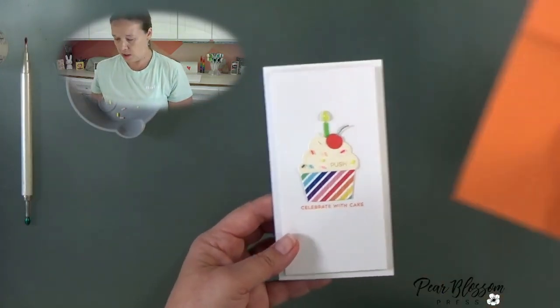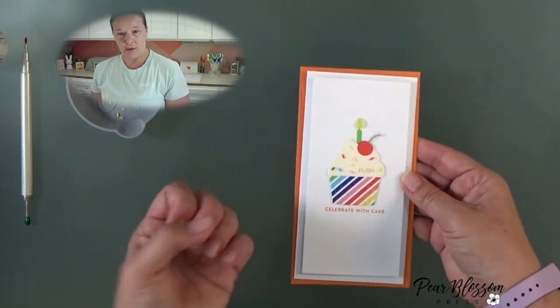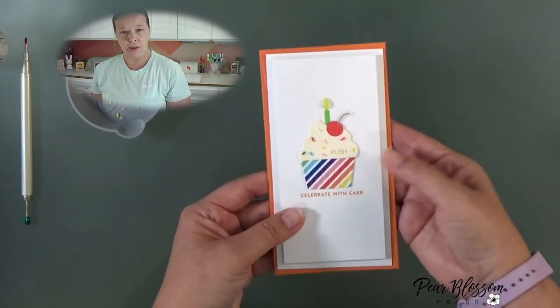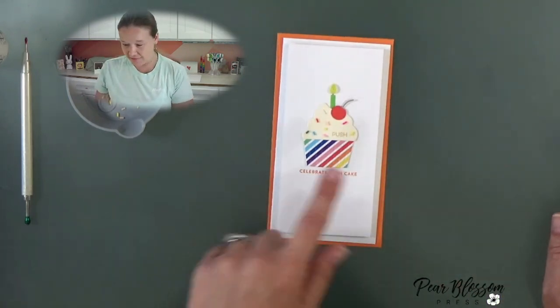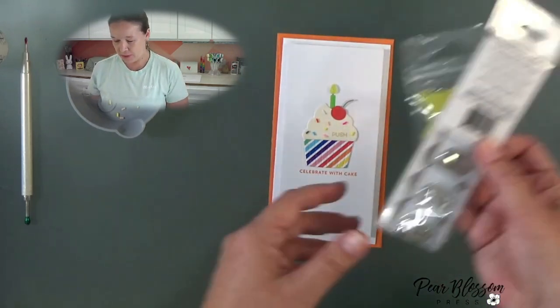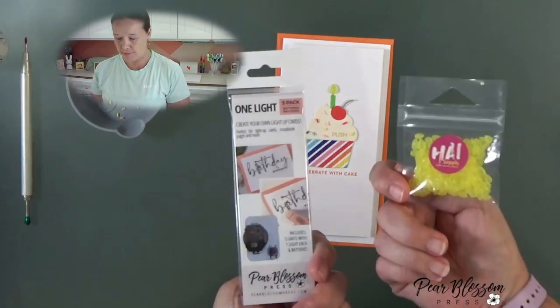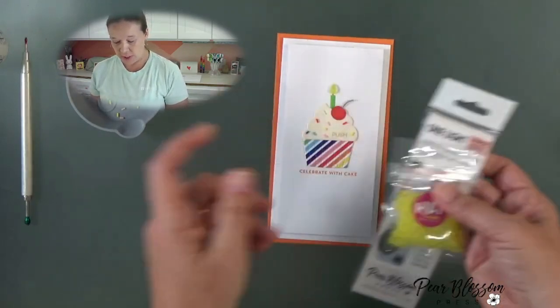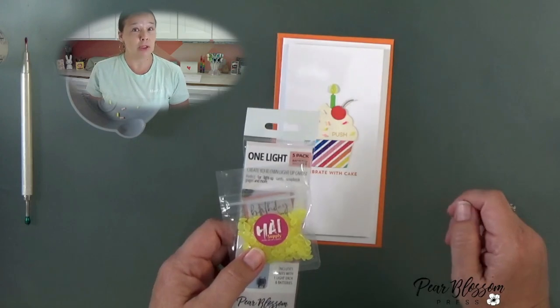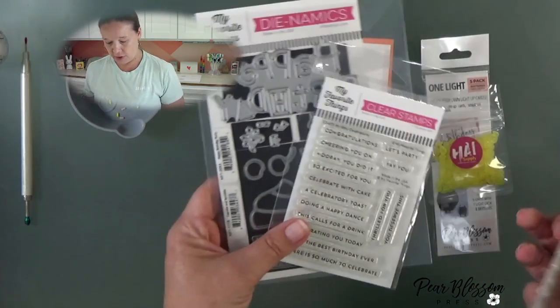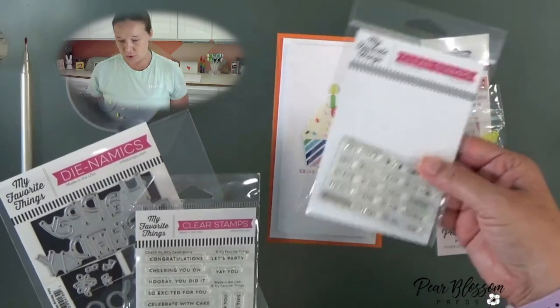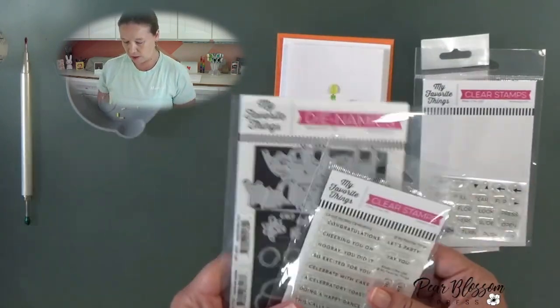All right, finished card. Coordinating envelope to make the colors pop. Push the button. All set. I hope you've enjoyed playing with this and give us a try. If you'd like more one lights, you can find them on our website. Same with the gems. And be on the lookout for that foam tape. It should be here in just a couple of weeks. Hit up My Favorite Things for stamps and dies. We also do have the Push Here stamps on our website as well.